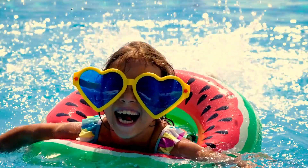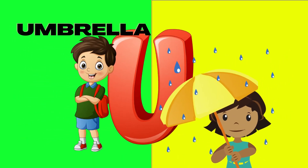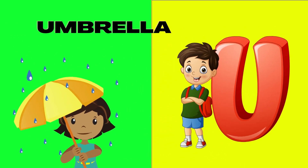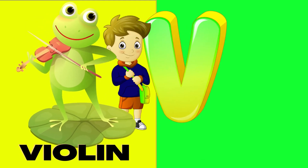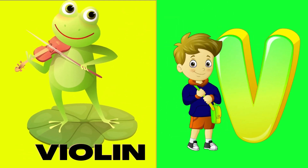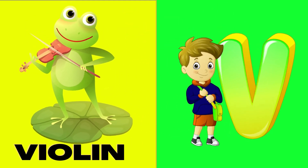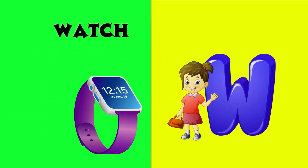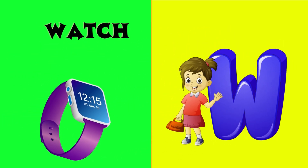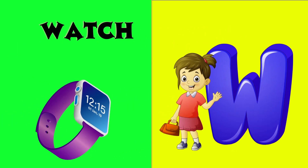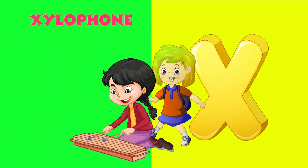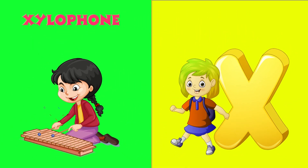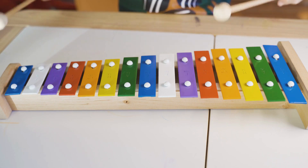U is for umbrella, u-u-umbrella. V is for violin, v-v-violin. W is for watch, w-w-watch. X is for xylophone, x-x-xylophone.